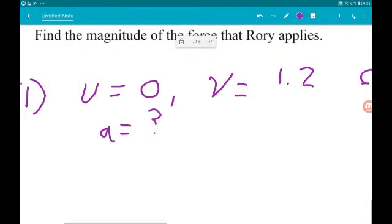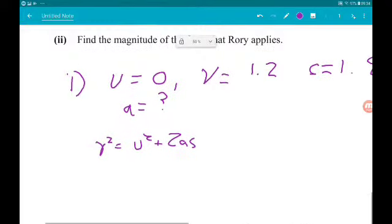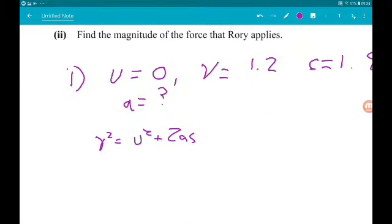Putting in our numbers we get 1.2 squared is equal to 0 squared add 2as, so 2 times 1.8.